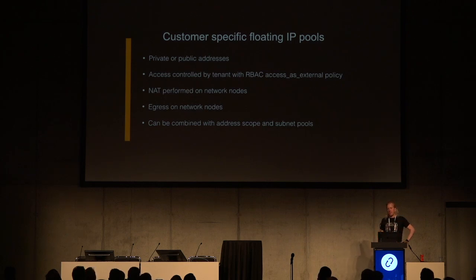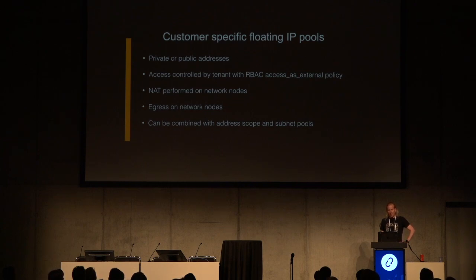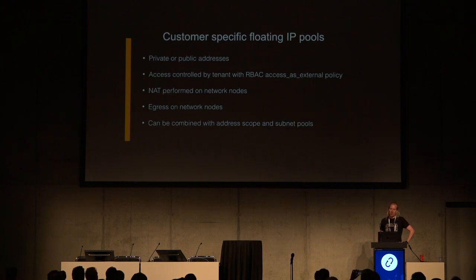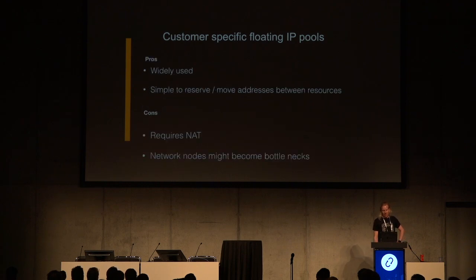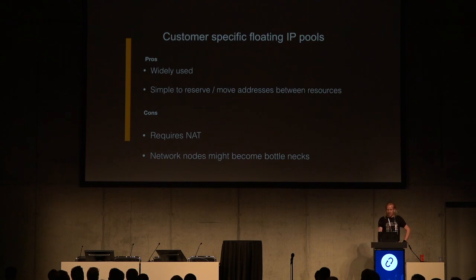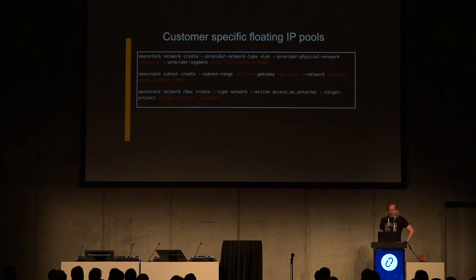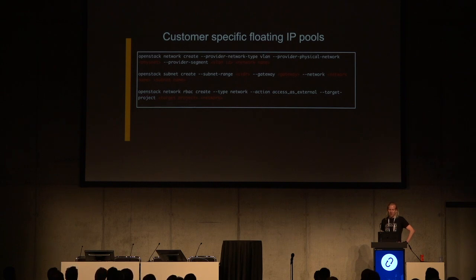You can also create customer-specific floating IP pools — basically the same thing, but you use access control by creating RBAC rules with the policy access 'access as external', which limits this to certain customer projects. So you can have a customer with their own floating IP pools. Basically the same pros and cons, except it's not shared between customers. The only difference is that you do an RBAC create and create an 'access as external' policy for the specific network, which makes it visible only to that project as an external network.